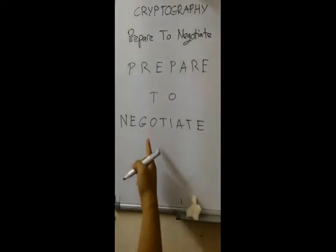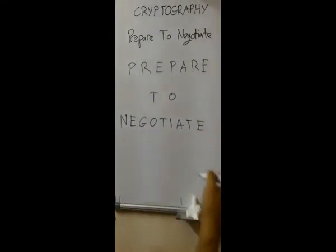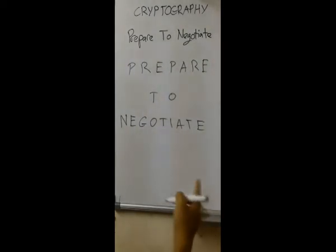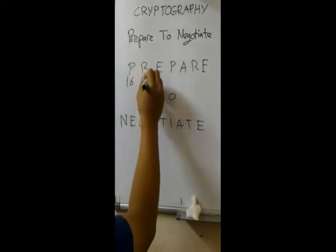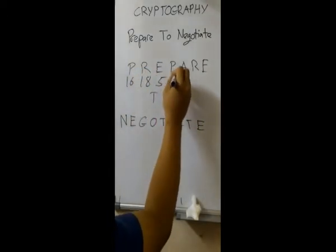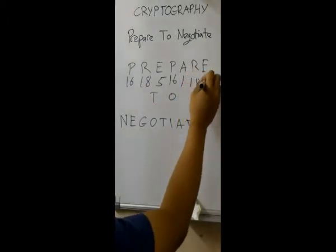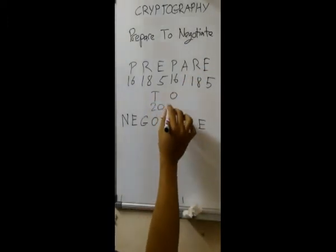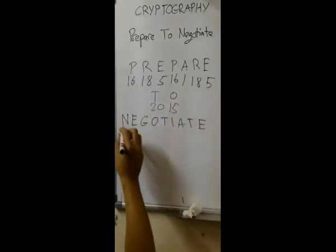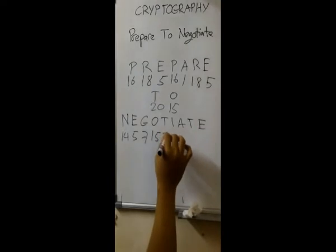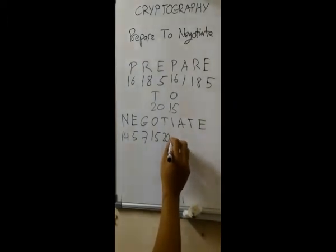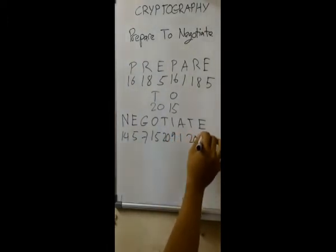As we use A, B, C equal to 1, 2, 3, we assign 1, 2, 3 corresponding to A, B, C through to Z for each letter in the message. So we will get: 16, 18, 5, 16, 1, 18, 5, 3, 20, 15, 14, 5, 7, 15, 20 — and it should be 9 — 9, 1, 20, and 5.